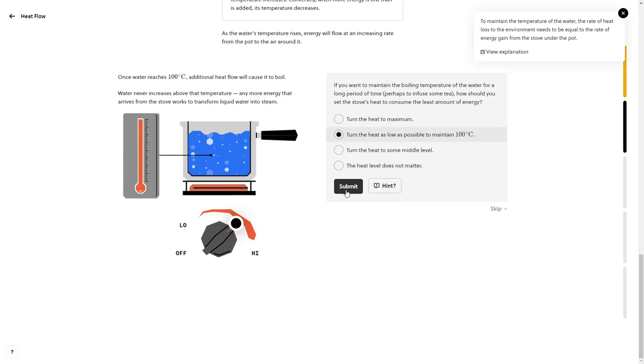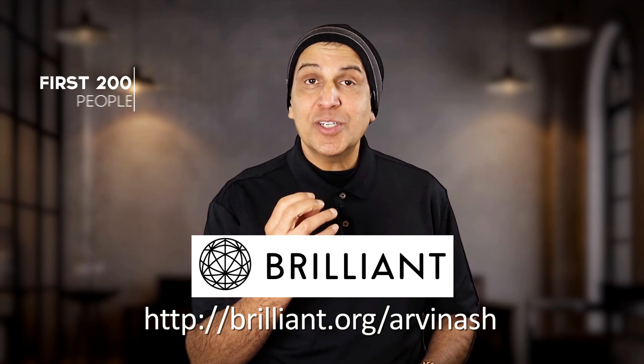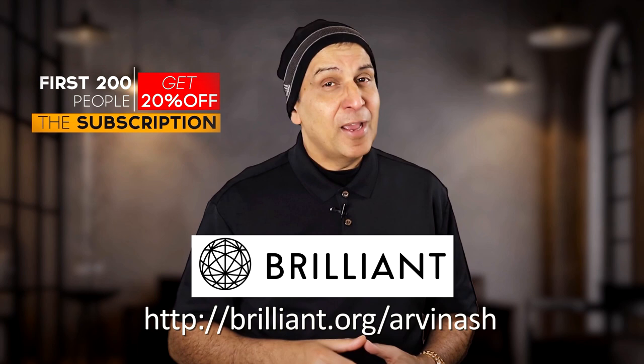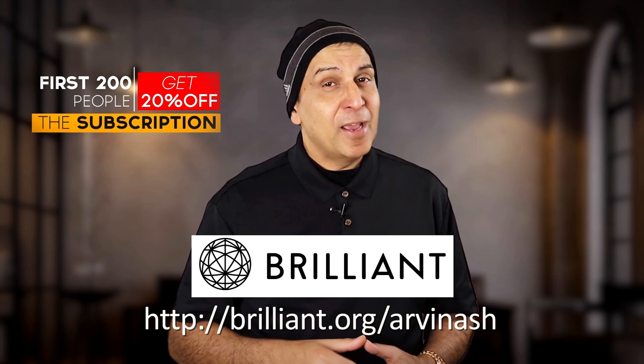Brilliant has a special offer for Arvin Ash viewers right now. If you're among the first 200 people to click the link in the description, you'll get 20% off your subscription. If you haven't tried Brilliant already, this is a great opportunity to start. So be sure to click the link in the description. And if you have a question for me or any of the other viewers, please leave them in the comments section. I'll see you in the next video, my friend.